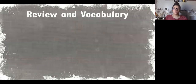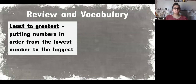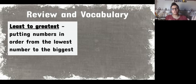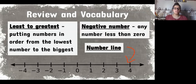Let's do some review and vocabulary. Ordering numbers from least to greatest means putting numbers in order from the lowest to the largest number. A negative number is any number less than zero. We'll also be using a number line today — you may have seen one before, or it may be new to you.